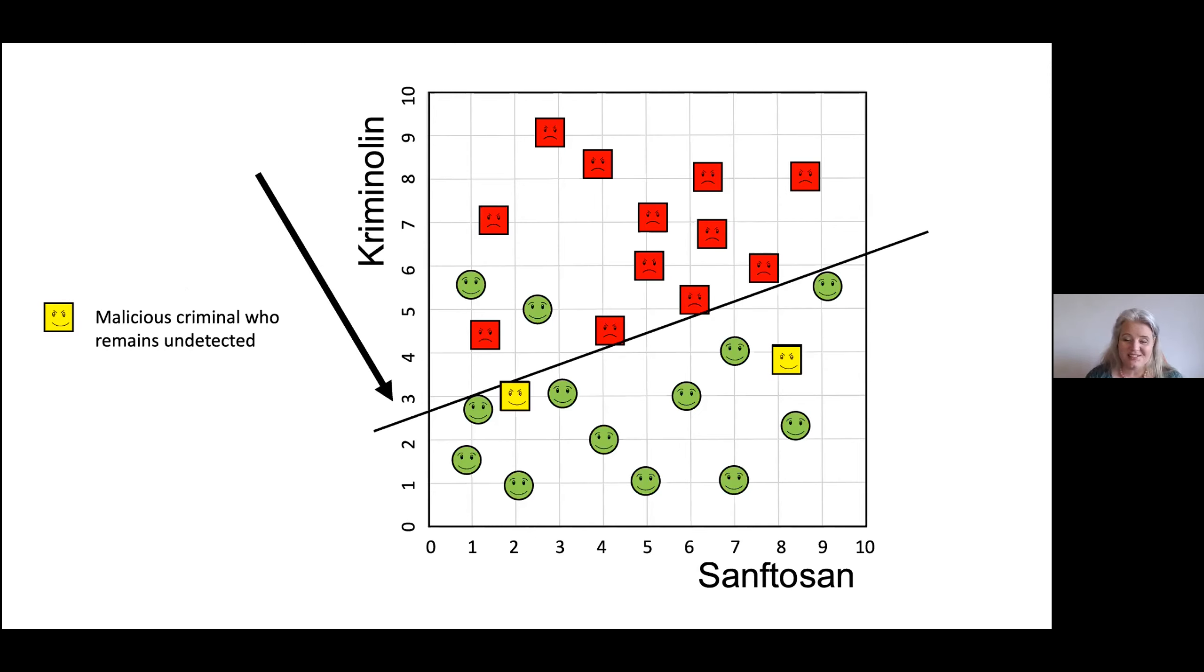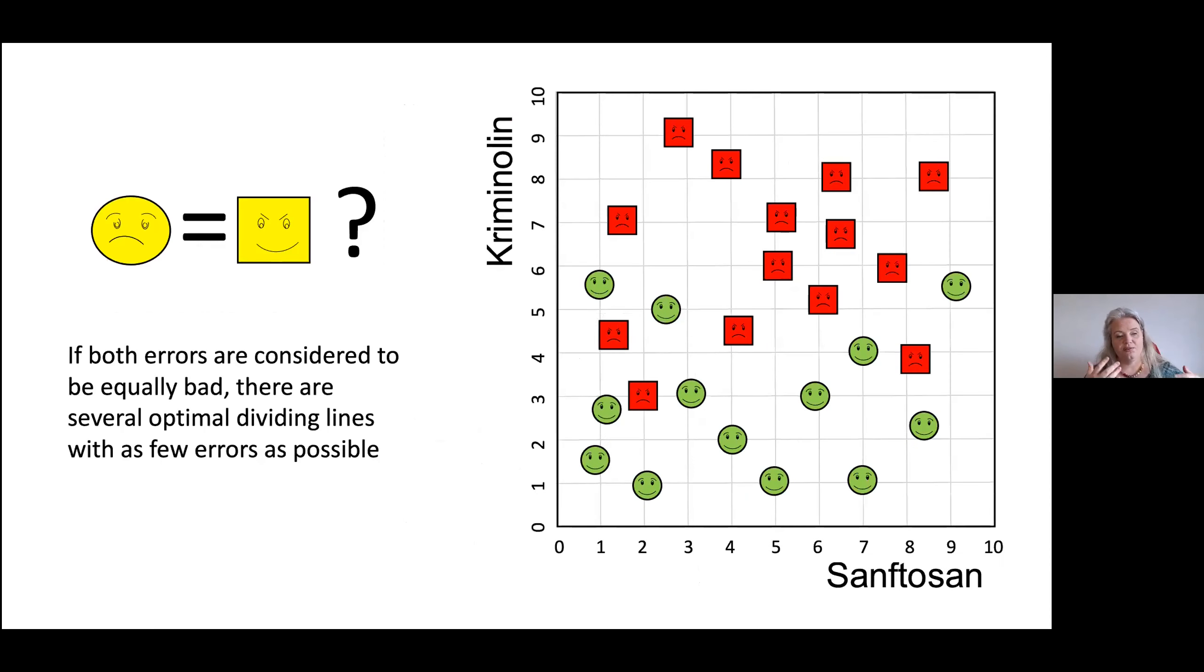You see the dataset is such that we can never have an optimal division line between the two groups. We'll always make some error. For example, we'll have either malicious criminals who remain undetected by our line, or innocent citizens who are considered criminals. The question is what you try to optimize. If you consider both errors to be equally bad, even if you agreed on that objective function, we'd have at least three lines that would be equally well. Miss Miller would be between these lines. For one line, she'd be on the red side, and for the other two, she'd be on the green side.